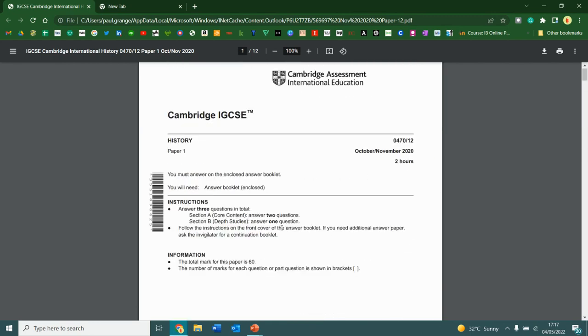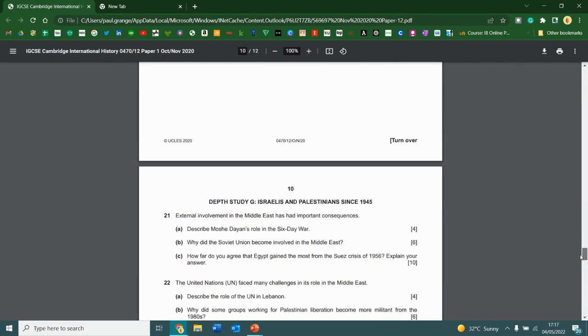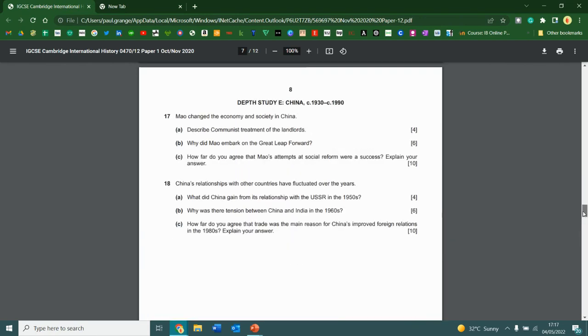Then once you've done that, the third question comes from our depth study. My class, what we did was China. So you are going to scroll down or flick to the page of your exam booklet until you find the questions on China. And then there, you've got two choices. You cannot mix and match. You cannot answer 17a and then 18b. You have to do either all of 17 or all of 18. You've got no choice. But you do have a choice over which question to answer.